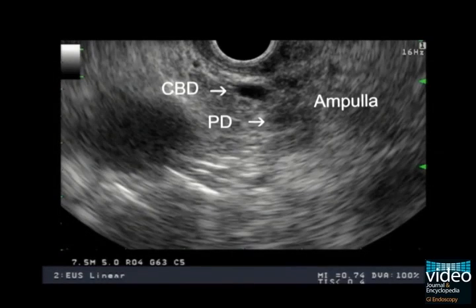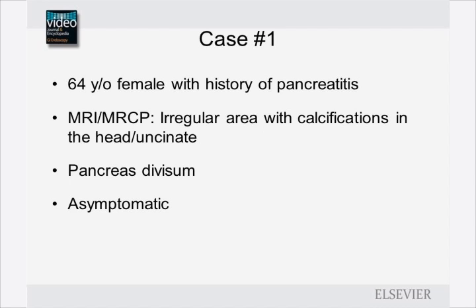We will review three cases of pancreas divisum. Case number one: a 64-year-old female with history of pancreatitis. An MRI MRCP showed an irregular area with calcifications in the head and uncinate of the pancreas. Pancreas divisum was incidentally noted.